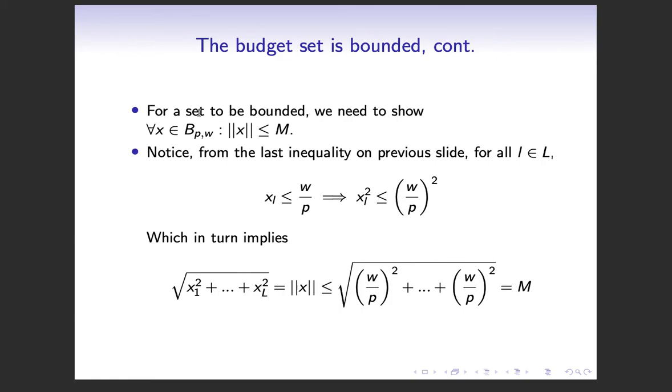So here again is the definition of the set being bounded. So we have to show that the Euclidean norm is going to be less than M. So we're still trying to find this M. And from the last inequality, like I mentioned, we know that for all L, X sub L is less than w over rho. And these are both positive, because wealth is strictly positive too.